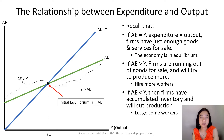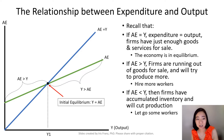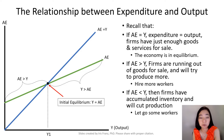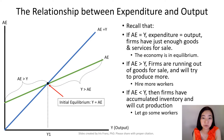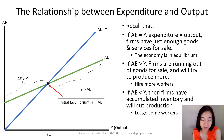Recall the diagram of the 45-degree line and the aggregate expenditure schedule. At the intersection, we know this economy is in equilibrium because our output is exactly equal to the aggregate expenditure. Notice that this aggregate expenditure schedule, the green line, is cut by the 45-degree line.